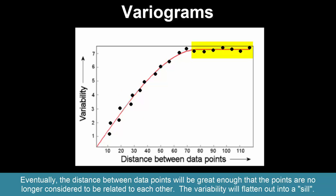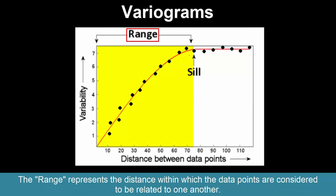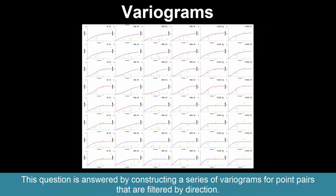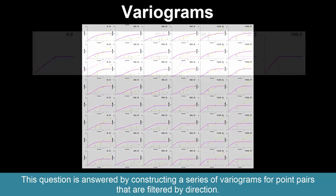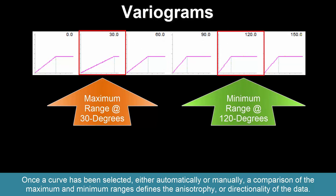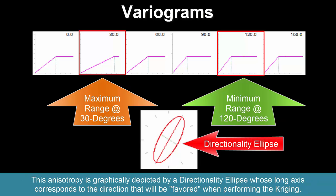Eventually, the distance between data points will be great enough that the points are no longer considered related to each other — the variability will flatten out into a sill. The range represents the distance within which the data points are considered related to one another. This question of whether points are more related in one direction than another is answered by constructing a series of variograms for point pairs filtered by direction. Once a curve has been selected, either automatically or manually, a comparison of maximum and minimum ranges defines the anisotropy, or directionality, of the data. This anisotropy is graphically depicted by a directionality ellipse whose long axis corresponds to the direction favored when performing the kriging.